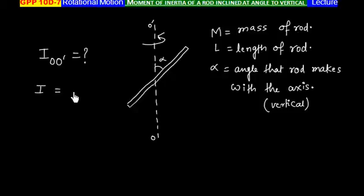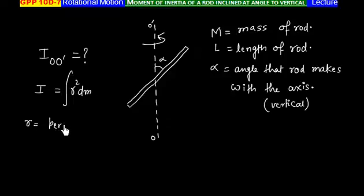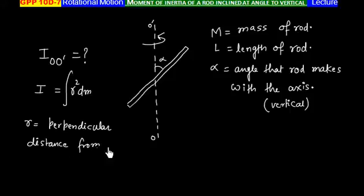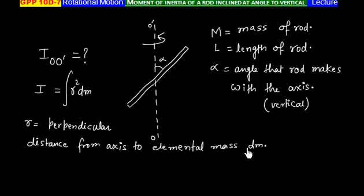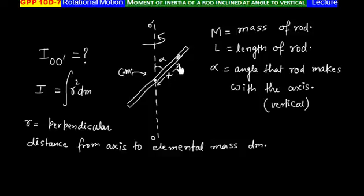The definition for moment of inertia is the integral of R squared dm, where R is the perpendicular distance from the axis to the elemental mass dm. Let us consider an elemental mass at a distance x from the center of mass of this rod, and this elemental section has a length of dx.